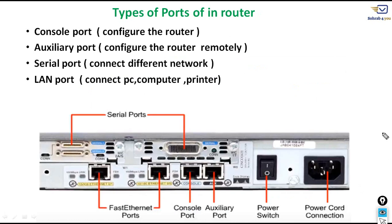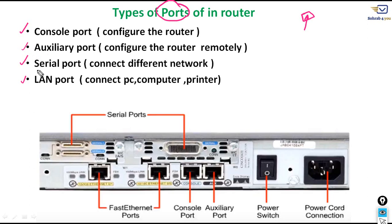Now we are going to talk about the types of ports in a router. A port is a hole where you insert something — that is called a port. We have four types of ports: console port, auxiliary port, serial port, and LAN port. The first one is the console port, which is an RJ-45 port, and it is used to configure the router.